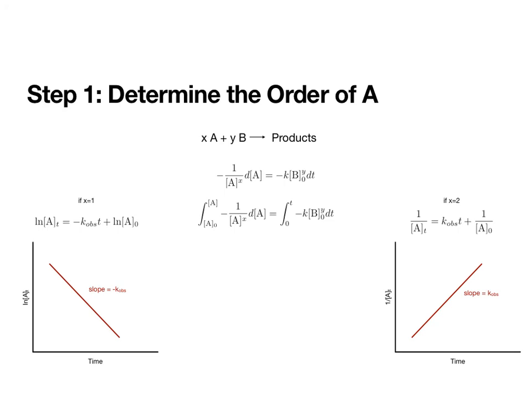So when we have this sort of problem, the first thing that we really have to do is we have to determine the order of one of our reactants. And that reactant is going to be the one that we don't have a high concentration of, so it's the one that we're monitoring. So we worked out the differential rate law on the last slide. The next step will be to integrate that. But we don't know what A to the X is. We don't know what X is.